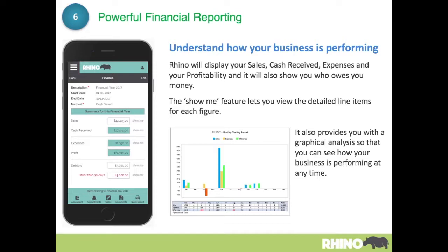There's also the financial screen — a very powerful screen. It shows you all of your sales, cash received, expenses, and your profit. It also displays your debtors and any debtors that are more than 30 days old. You can use the 'show me' function to highlight the details behind each figure, and there's also a quick report that will display a monthly breakdown of how your business is performing.